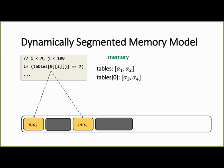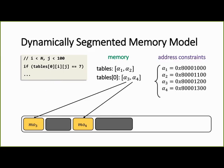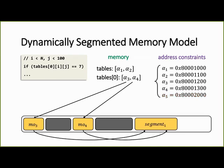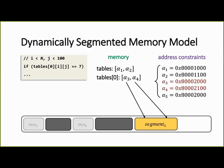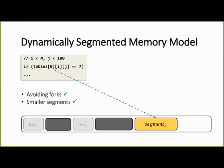Now let's see how we can use our model to implement a dynamic version of the segmented memory model. Going back to our example, we had this symbolic pointer which points to MO3 and MO4, which now have the symbolic base addresses alpha 3 and alpha 4. First, we create a new segment with the symbolic base address alpha 5. We copy the contents of the two objects to the new segment. We deallocate MO3 and MO4. And finally, we update our address constraints. So now alpha 3 and alpha 4 point into locations in our new segment. Now, when we resolve again our symbolic pointer, it will point only to one object, the new segment. So we can indeed avoid the forks.